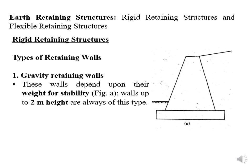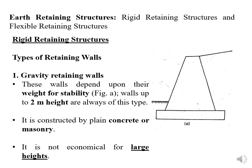Gravity retaining walls depend upon their own weight for stability. They are made up of either concrete or bricks and retain the earth by their own weight. They can go up to two meters in height and are constructed using plain concrete without reinforcement. They are not economical for large heights because more concrete weight is needed to take the earth load.